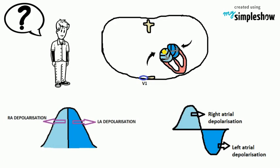Right atrial depolarization occurs first, so the first half of the P-wave represents right atrial depolarization, and the second half represents left atrial depolarization. In lead II and V1, the P-wave is biphasic.